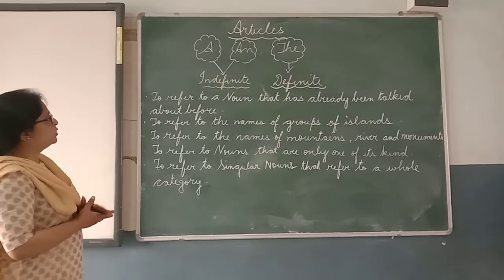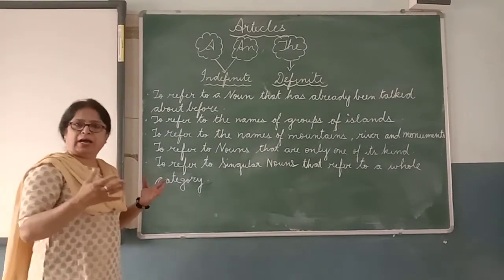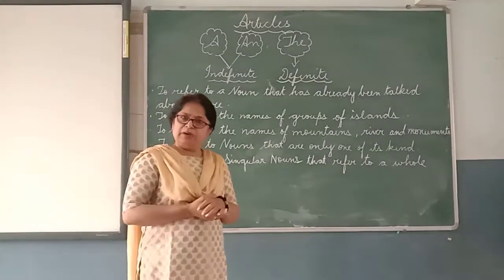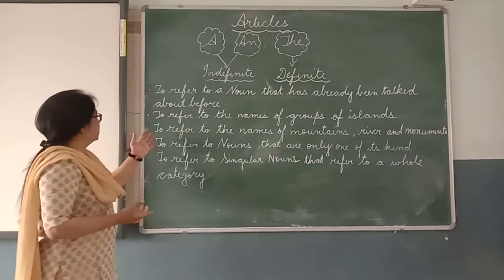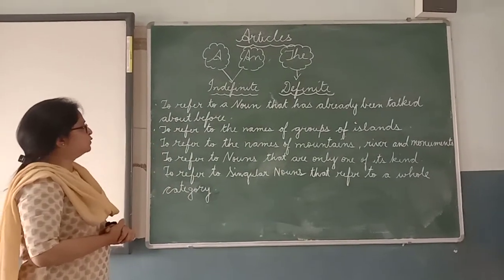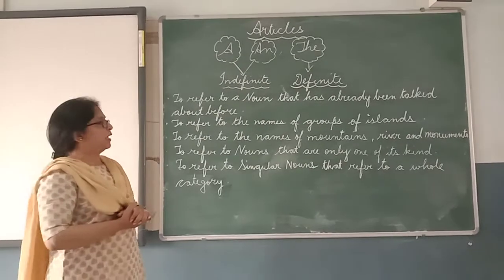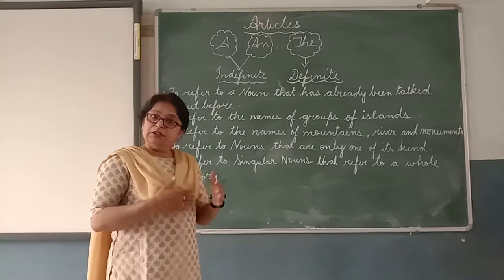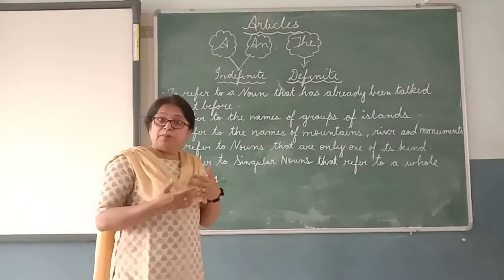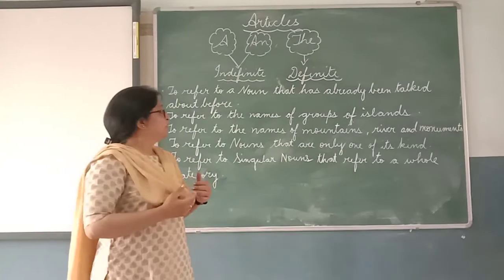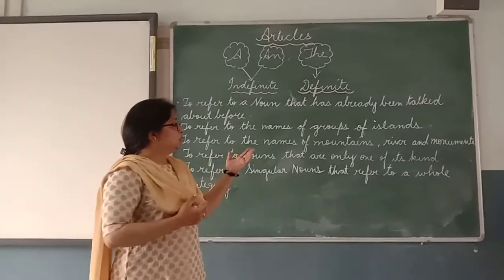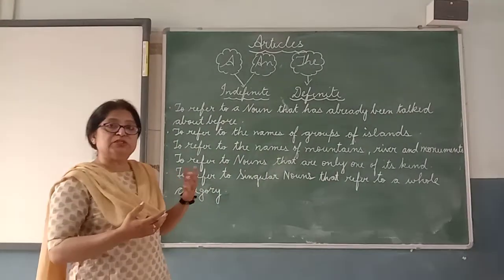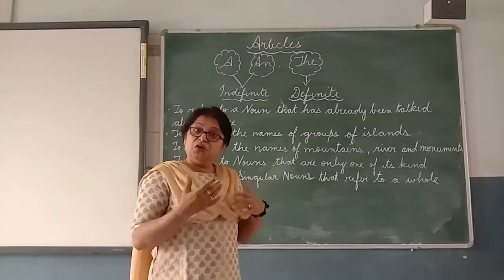The next use: 'The' is used to refer to the names of a group of islands — for example, the Andaman and Nicobar Islands, the Lakshadweep Islands. It is also used to refer to the names of mountains, rivers, and monuments. For example, the Yamuna river, the Ganga river, the Brahmaputra river, the mountain Everest, and monuments like the Taj Mahal, the Red Fort.